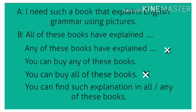इस तरीके से देख सकते हैं कि जो पहला और दूसरा sentence है, इनका जो meaning है, इसमें से किसी choice की बात नहीं हो रही कि उनमें से किसी एक को choose किया जा रहा है। तब इस तरीके से 'any' का use दूसरे sentence में गलत है, जबकि पहले sentence में 'all' का use सही है। क्योंकि वहाँ पर सिर्फ जानकारी दी जा रही है books के बारे में कि सभी पुस्तकों में ऐसी खासियत है। लेकिन last में जो sentence लिखा: 'You can find such explanation in all of these books or in any of these books' — इसमें चुनाव की बात हो रही है।